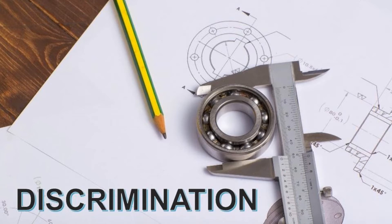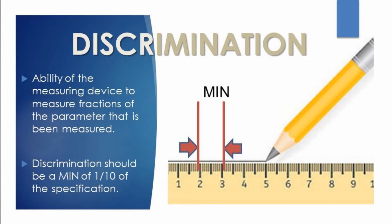Discrimination is very key because if you don't have proper discrimination, you are going to have wrong or incomplete values and an incomplete analysis of your Gauge R&R. Discrimination is the ability of your measurement system to measure fractions of the parameters you are studying. The recommendation is to have a minimum ratio of 1-to-10 — meaning your spec must be divided into at least 10 parts that your measurement system can resolve. The ideal recommendation is 1-to-20, or better.